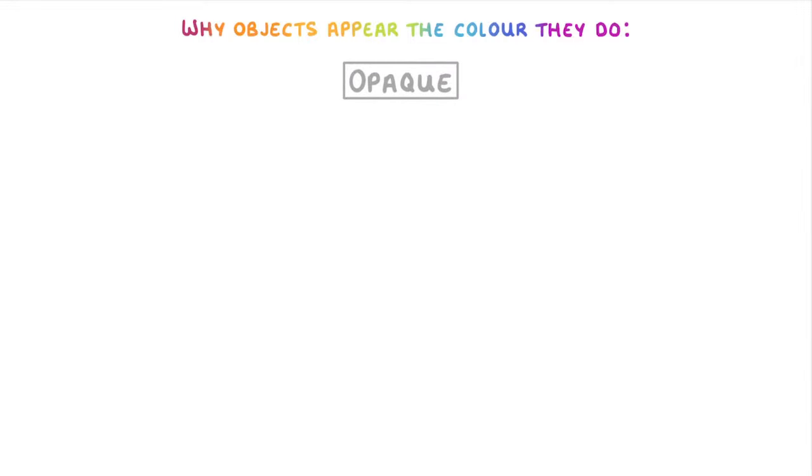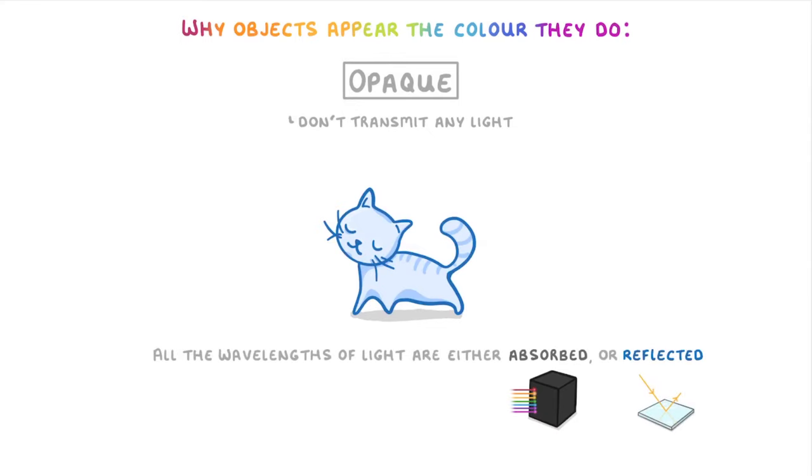Opaque objects are those that don't transmit any light, like a cat. This means that all the wavelengths of light are either absorbed or reflected, and it's the reflected ones that determine the colour.